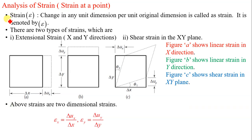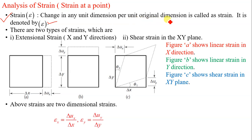As we know from the subject strength of materials, which we are studying in the second year of engineering, strain can be defined as change in any unit dimension per unit original dimension. It is denoted by epsilon.